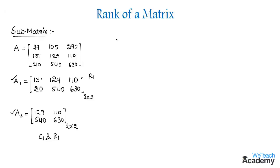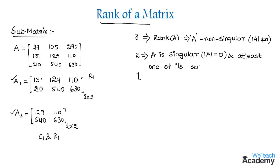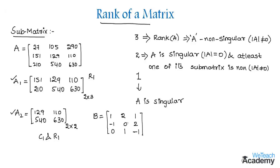Now coming to rank. The rank of a matrix is generally 3, 2, 1, or 0 in the case of a null matrix, denoted as rank of matrix A. Rank is 3 if and only if matrix A is non-singular, meaning the determinant of A is not equal to 0. Rank is 2 if A is singular (determinant equals 0) and at least one of its 2 by 2 sub-matrices is non-singular. Rank is 1 if every 2 by 2 sub-matrix of A is singular.